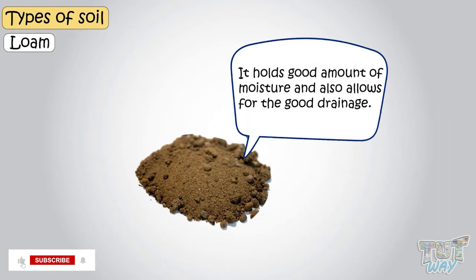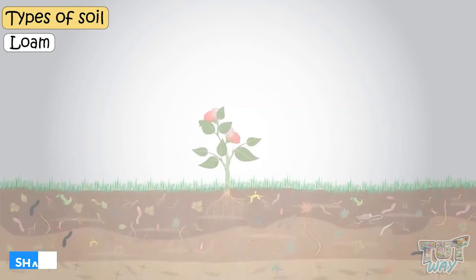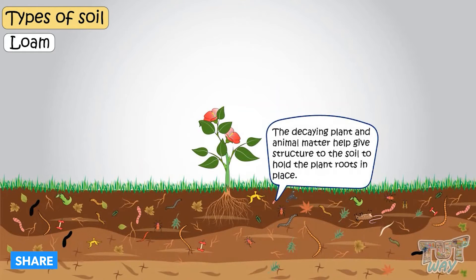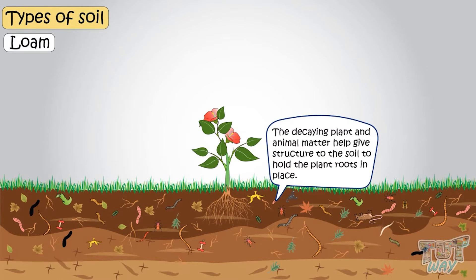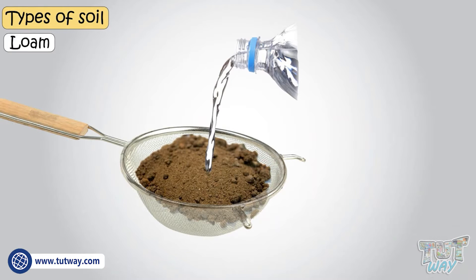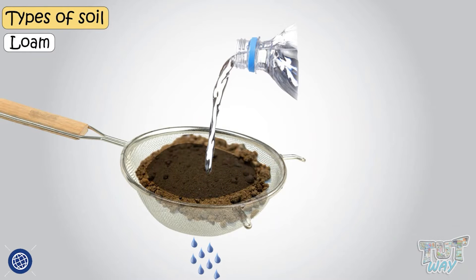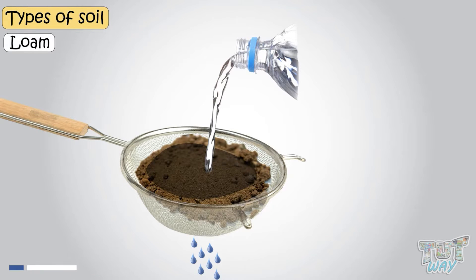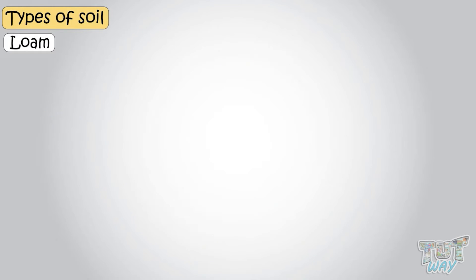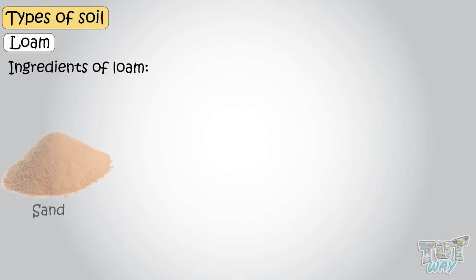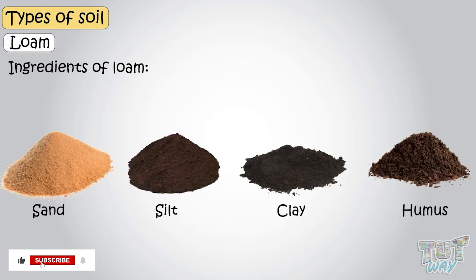So it holds a good amount of moisture and also allows good drainage. The decaying plant and animal matter help give structure to the soil to hold the plant roots in place. Loam also holds just the right amount of water, neither too little nor too much. It lets some water in while allowing the extra to drain. The ingredients of loam are sand, silt, clay, and humus.